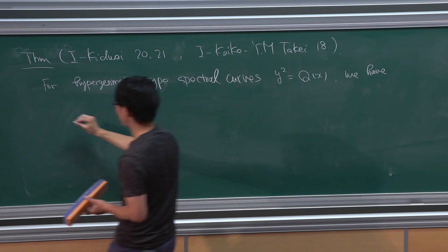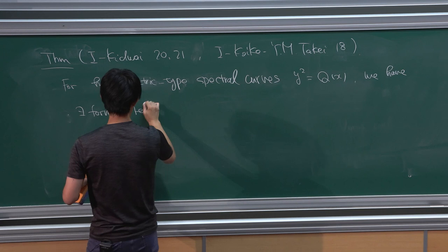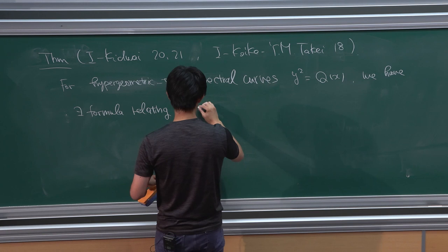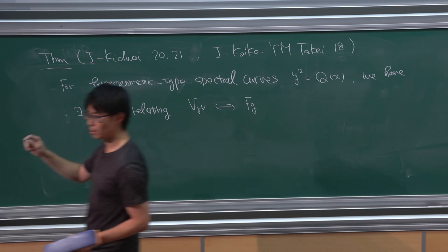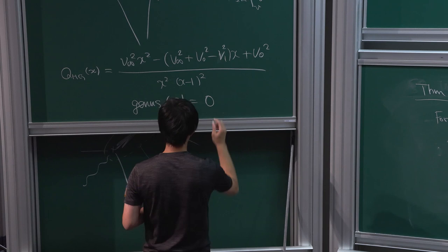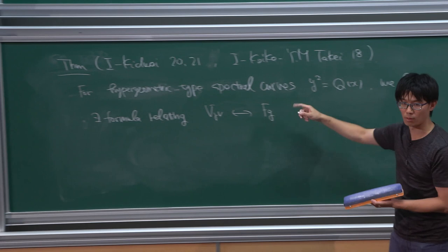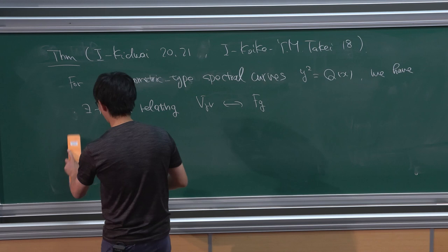First, there is a formula relating our Bohr's coefficients and topological recursion free energies. The Bohr's coefficients are obtained from genus-zero data — all members of the hypergeometric-type spectral curve are also genus zero. For genus-zero spectral curves, some simplification happens and we can describe the free energy very explicitly.